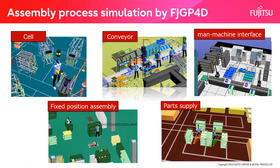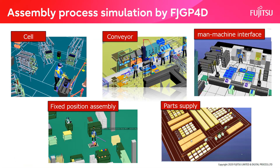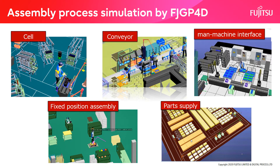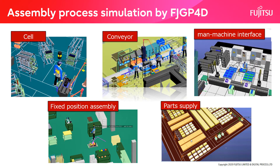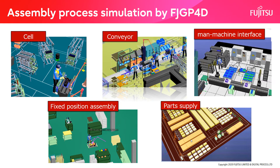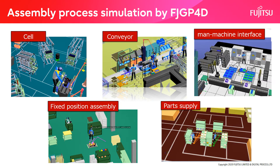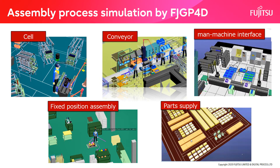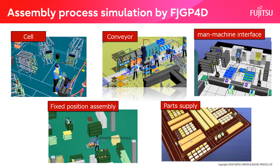FJGP4D can be verified for various production line types — for example, cell, conveyor, man-machine interface, fixed position assembly, and parts supply in the factory.